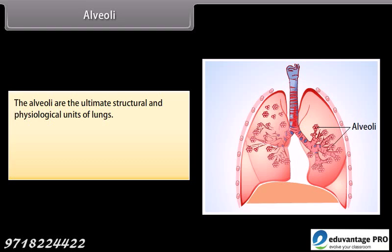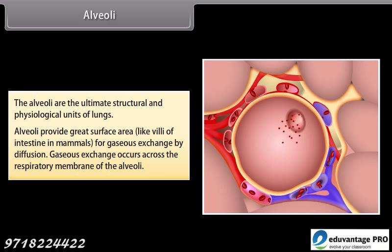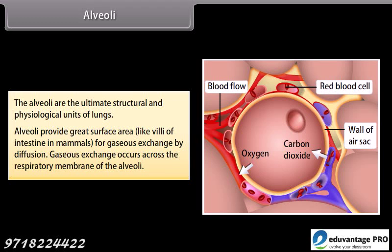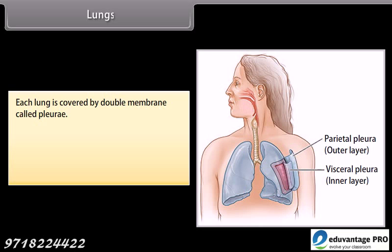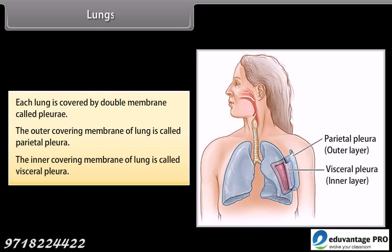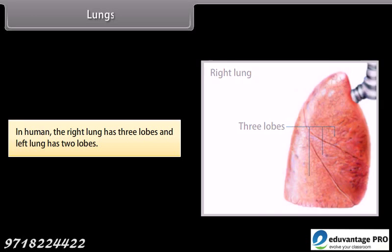The alveoli are the ultimate structural and physiological units of the lungs. Alveoli provide a great surface area, like villi of the intestine in mammals, for gas exchange by diffusion. Gas exchange occurs across the respiratory membranes of the alveoli. Each lung is covered by a double membrane called pleura — the outer membrane is the parietal pleura and the inner membrane is the visceral pleura. In humans, the right lung has three lobes and the left lung has two lobes.